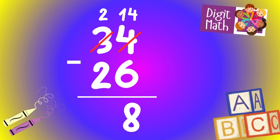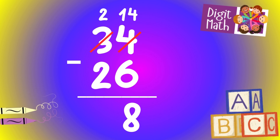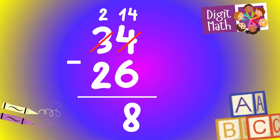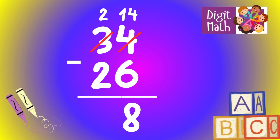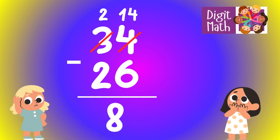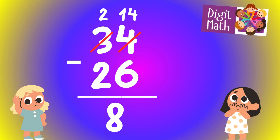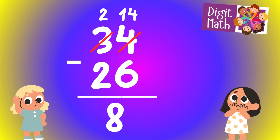In the tens column, we now have 2. Subtract 2 from 2, which equals 0. So the final result is 34 minus 26 equals 8.